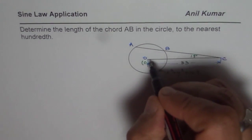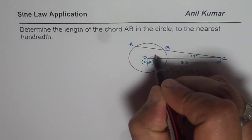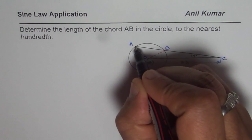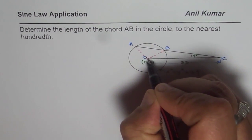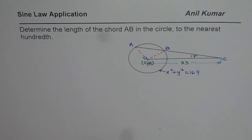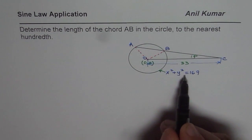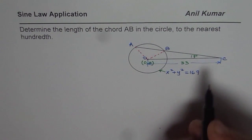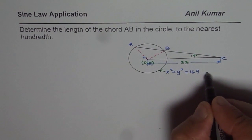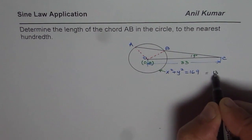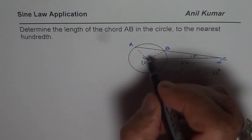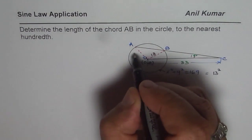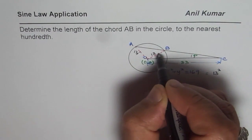Now what we can do here is we can join OB and OA. Now these two are actually the radius of the circle. The equation is x square plus y square equals to 169. We could always write this as 169 is 13 square. That means the radius is 13. So these lengths are 13 each.